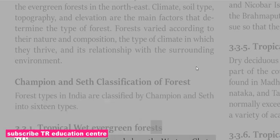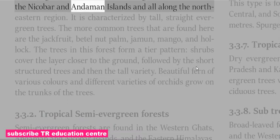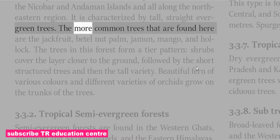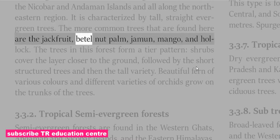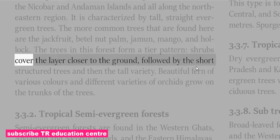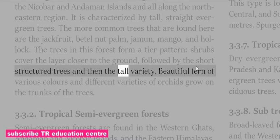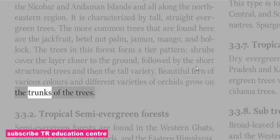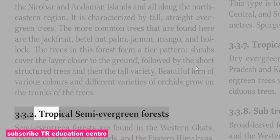Tropical Wet Evergreen Forests are found along the Western Ghats, the Nicobar and Andaman Islands, and all along the northeastern region. It is characterized by tall, straight evergreen trees. The more common trees are jackfruit, betel nut palm, jamun, mango and holloc. The trees form a tiered pattern — shrubs cover the layer closer to the ground, followed by short-structured trees and then tall varieties. Beautiful ferns of various colors and different varieties of orchids grow on the trunks of the trees.